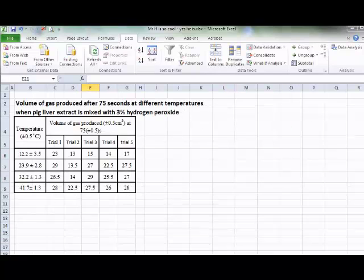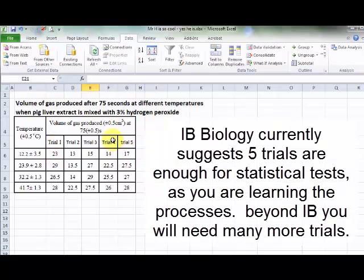Firstly, you need some data. Here we have four different temperatures and five trials. Perfect for an ANOVA.